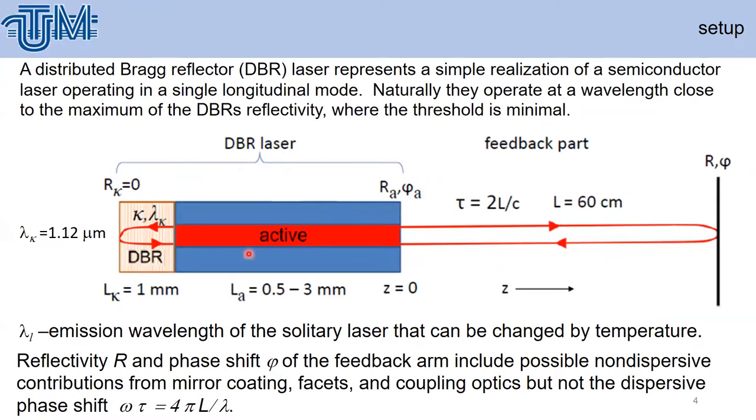Here I show the laser itself: a distributed Bragg reflector is connected with the active region. Such a device operates naturally at wavelengths close to the maximum DBR reflectivity where the threshold is minimal. We place a mirror at distance L.